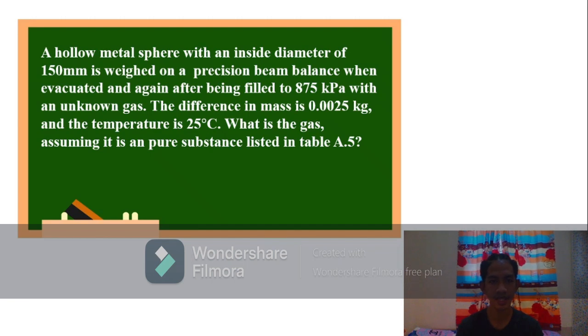Let's try this example. A hollow metal sphere with an inside diameter of 150 millimeters is weighed on a precision beam balance when evacuated and again after being filled to 875 kPa with an unknown gas. The difference in mass is 0.0025 kilograms and the temperature is 25 degrees Celsius. What is the gas? Assuming it is a pure substance listed in table A.5.